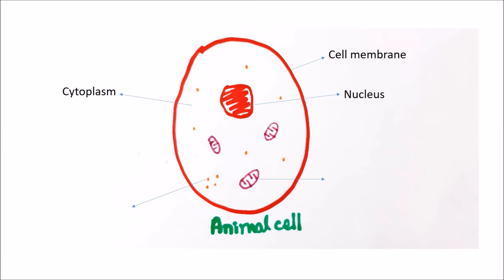Cytoplasm is a jelly-like substance where many chemical reactions take place. Ribosomes help to make proteins. And mitochondrion is where chemical reactions occur that release energy the body can use. A more powerful microscope reveals more structure inside the cell.